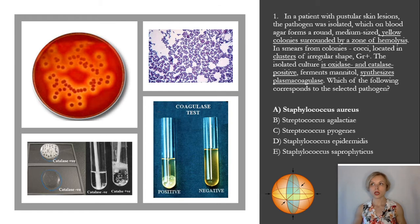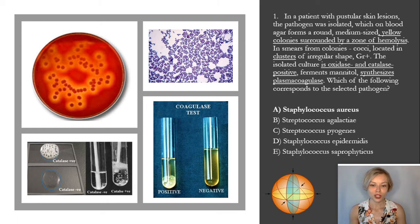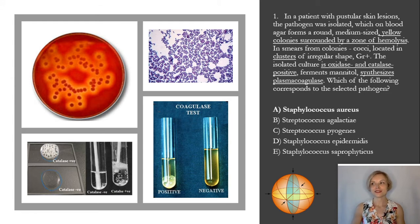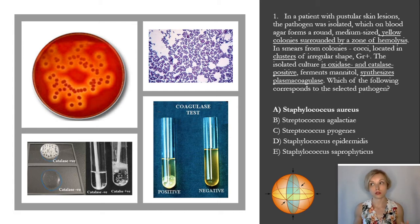Why? Because in this test you can see a lot of key words. For example, this pathogen has yellow colonies. We know that only Staphylococcus aureus has the ability to synthesize lipochromic pigment. This carotenoid pigment consists of 13 fractions and is synthesized only under aerobic conditions.